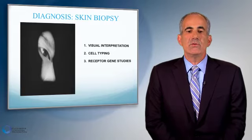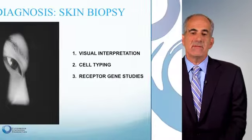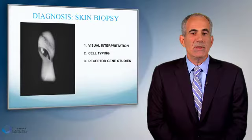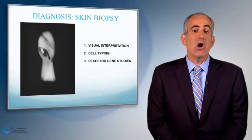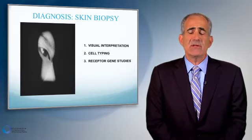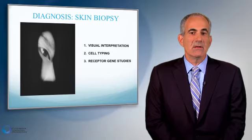That's why the biopsy result is really a visual interpretation of the characteristics on the slide, and many times we do not get a definitive diagnosis but a presumptive or suggestive diagnosis. To augment that visual interpretation, we also send skin biopsies for cell typing, which allows us to identify the type and subsets of lymphocytes in the skin, helping steer us toward a diagnosis of either T-cell or B-cell lymphoma. Additionally, the skin biopsy can be sent for receptor gene studies, which is another contributing piece of information. Overall, these pieces of information need to be correlated with what is on the skin.